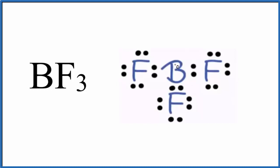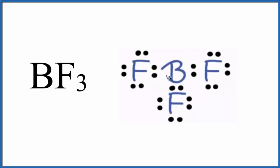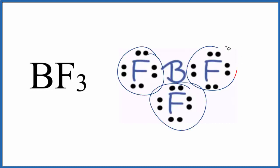It's a bit of an exception because boron only has six valence electrons, but that's okay — boron is an exception to the octet rule. So we have these six electrons shared with the fluorines. We have one, two, three fluorine atoms, and there are no lone pairs.